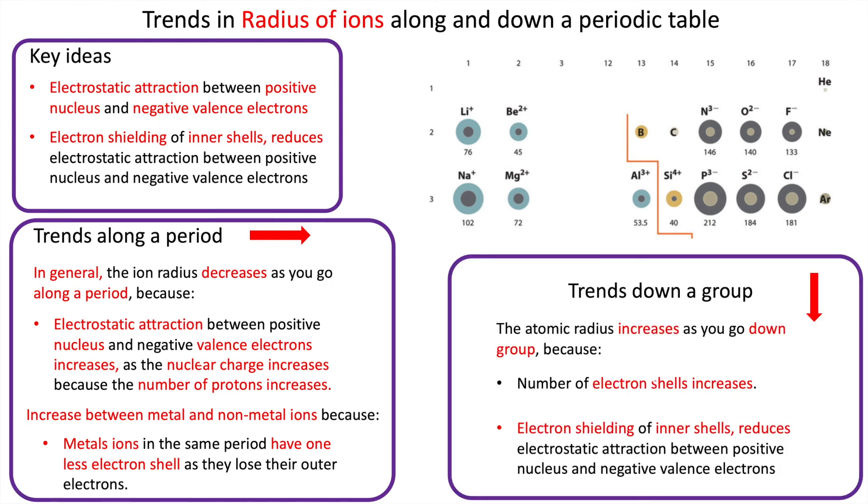So finding trends down the group is absolutely identical to the trends for the atomic radius, and so is the explanation.